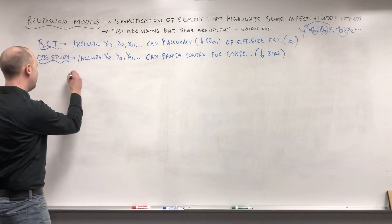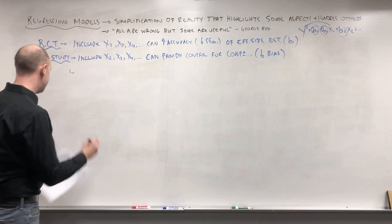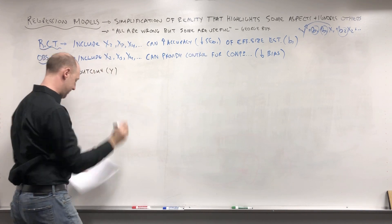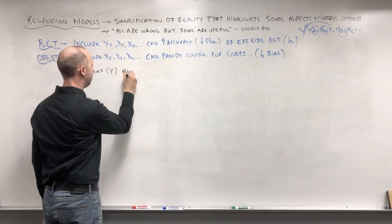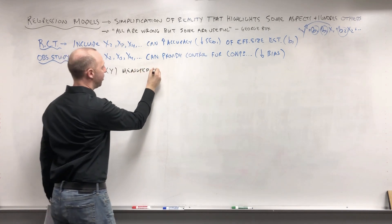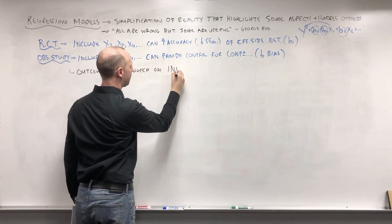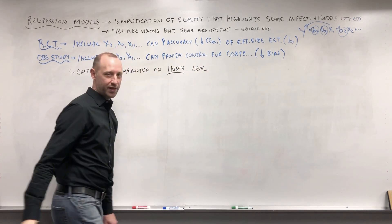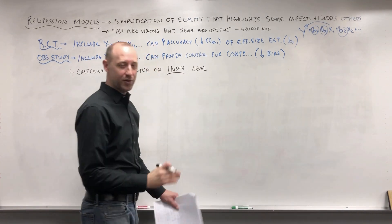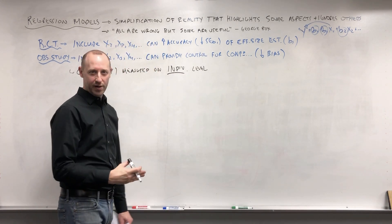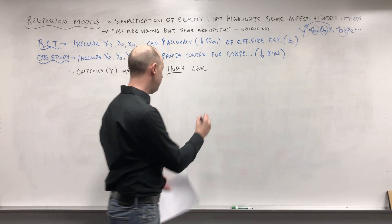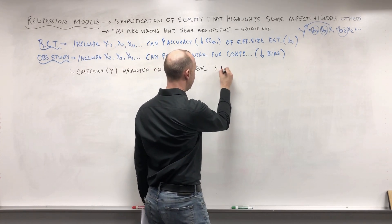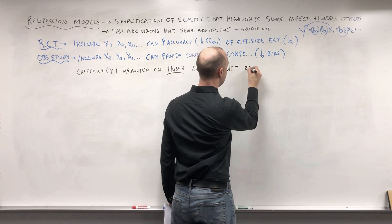One note I want to make is that most of the data we work with — the outcome or y variable — has been measured on an individual level. We record it for each person: whether the outcome happened or not, or if the outcome is numeric, what that numeric value is for each person. Because it's recorded on an individual level, it must be summarized.